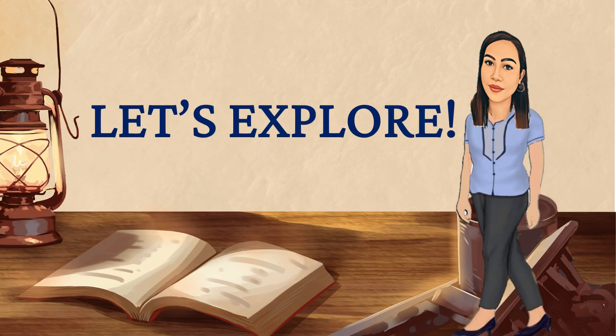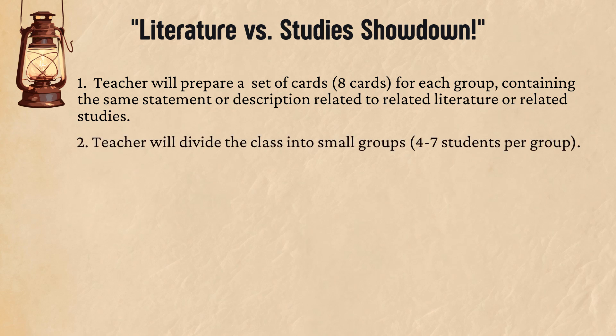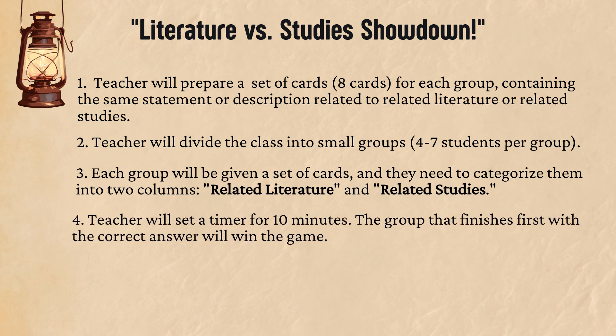Let's explore. Today we're going to have some fun while learning — get ready for an exciting challenge called the Literature vs. Studies Showdown. Your teacher will prepare a set of eight cards for each group containing statements related to related literature or related studies. The class will be divided into small groups of four to seven students. Each group will categorize the cards into two columns: related literature and related studies. The teacher will set a timer for 10 minutes, and the group that finishes first with the correct answers will win. Finally, your teacher will check and process the output.